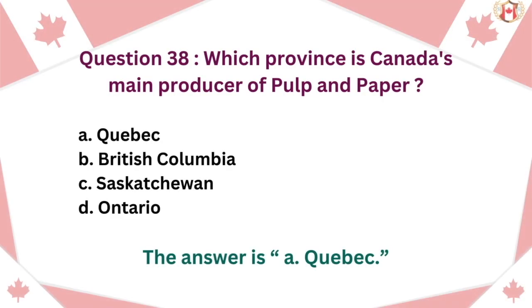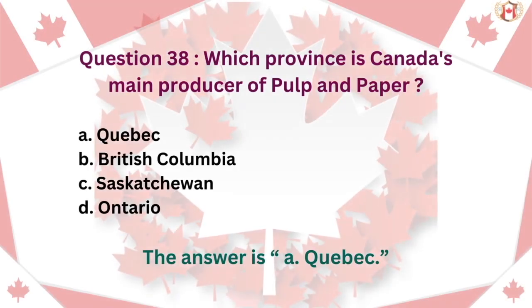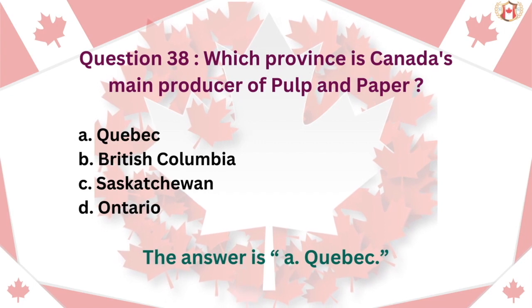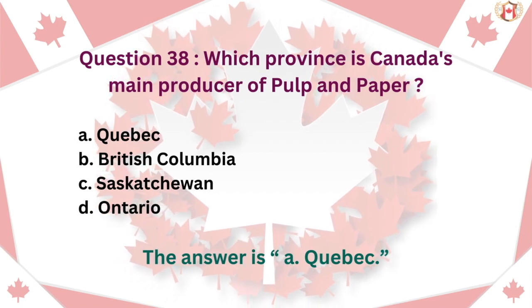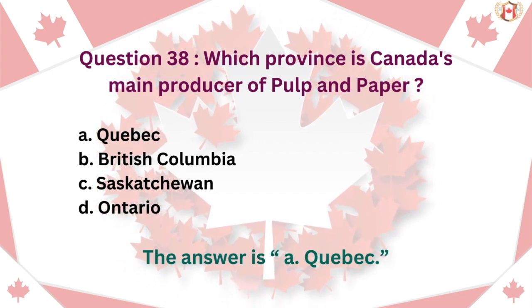Question 38: Which province is Canada's main producer of pulp and paper? A. Quebec, B. British Columbia, C. Saskatchewan, D. Ontario. The answer is A. Quebec.